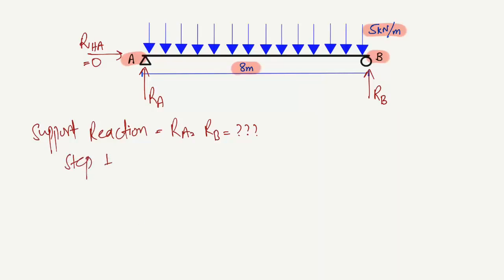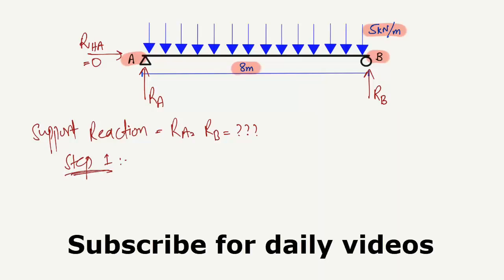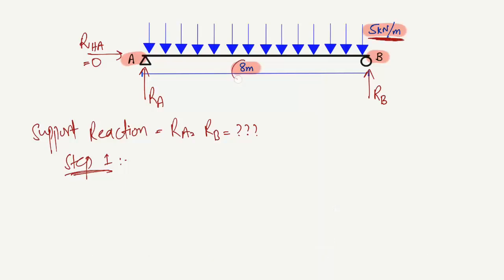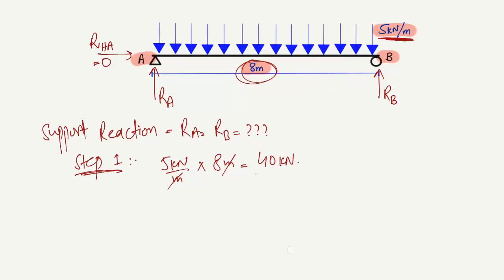Step number one: multiply the uniformly distributed load value by the beam length. So 5 kN per meter multiplied by 8 meters — the meter units cancel — giving us 40 kN. This 40 kN is the total load acting on this beam, now treated as a concentrated load.